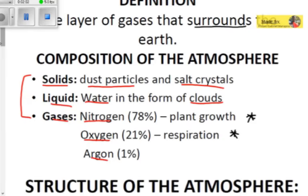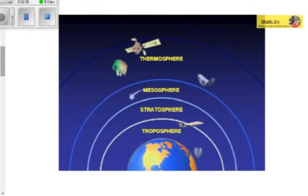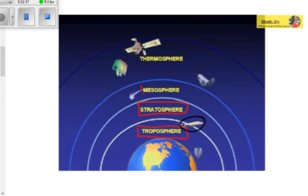Now let's look at the structure of the atmosphere. The atmosphere has four main layers. The first is the troposphere — you can see an airplane flying in it in the diagram. The second is the stratosphere. The third is the mesosphere. And the fourth is the thermosphere, which is able to carry satellites.